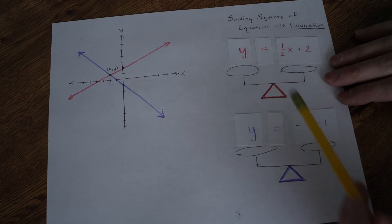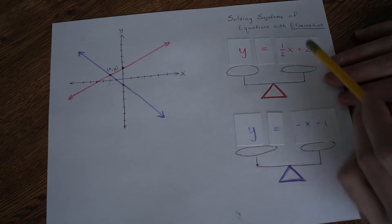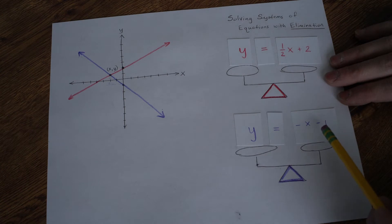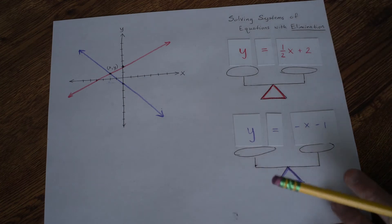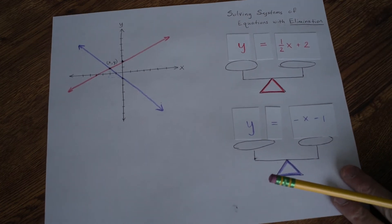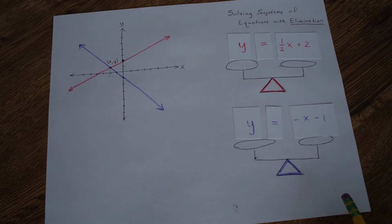And I'd have 1 half take away once a negative half x, and then I have 2 plus negative 1, that's 1. Nothing's eliminated, and we actually want to eliminate an x value or a y value.